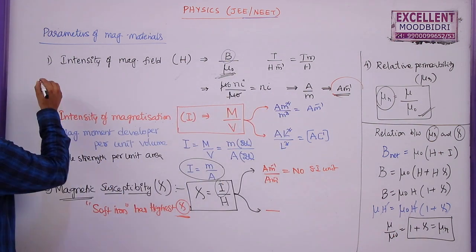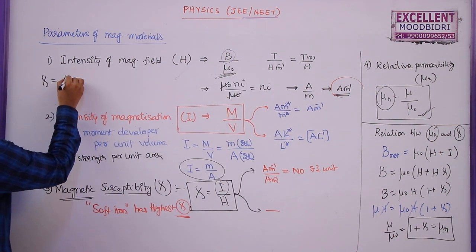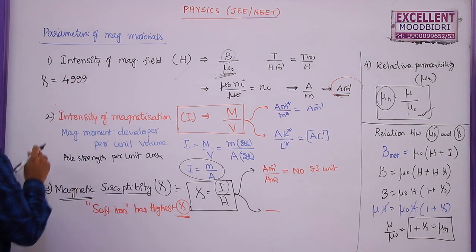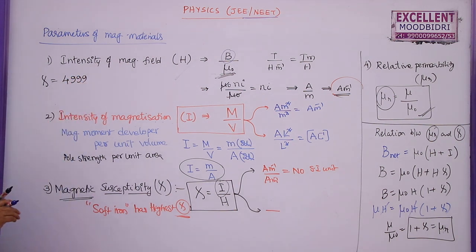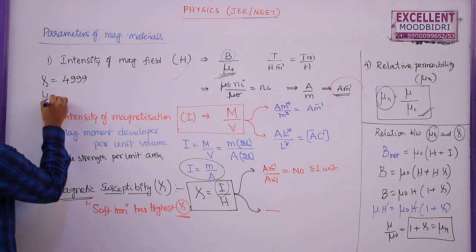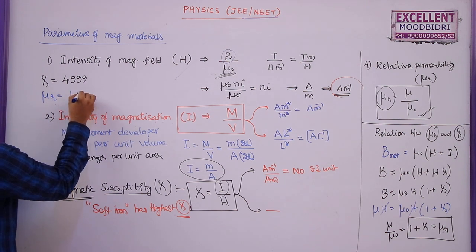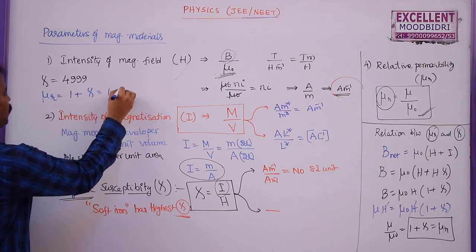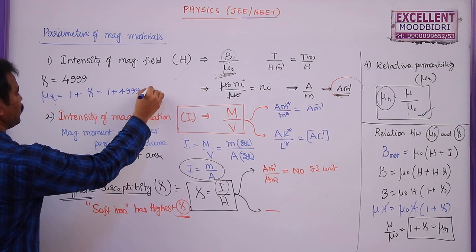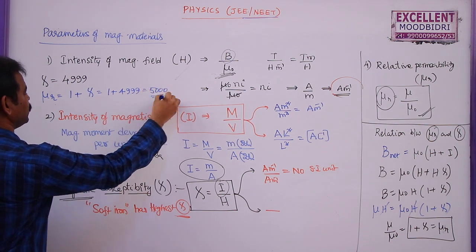In a problem, if susceptibility χ is given as 4999, the relative permeability is μR = 1 + χ = 1 + 4999 = 5000.